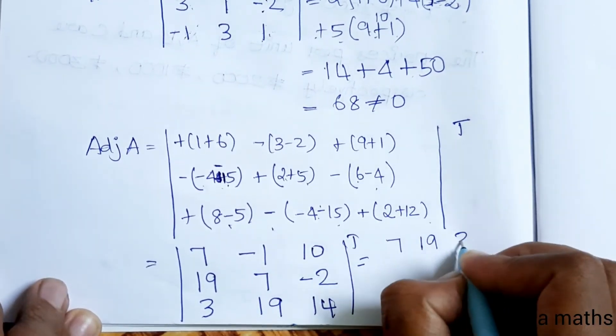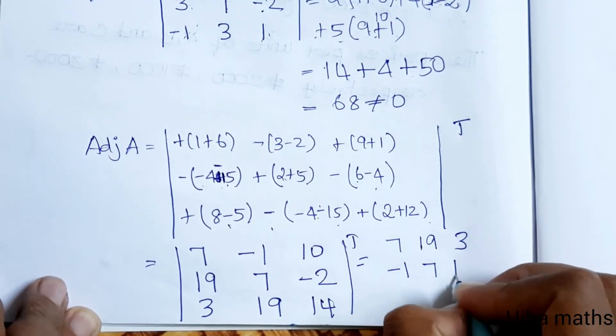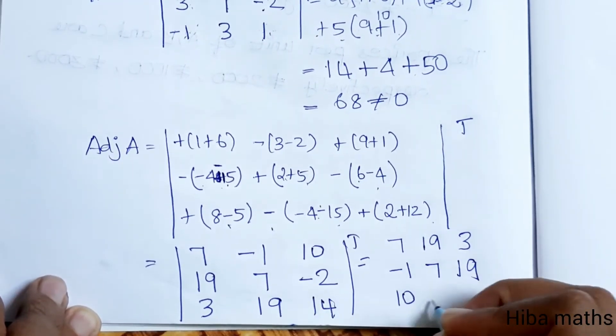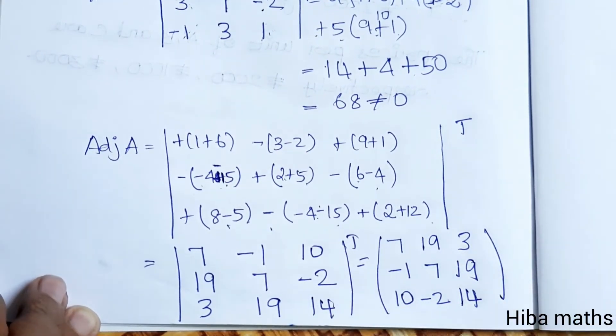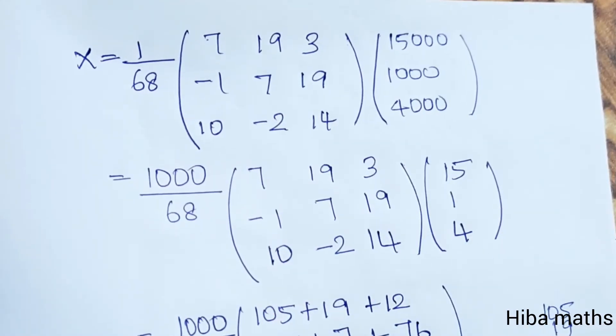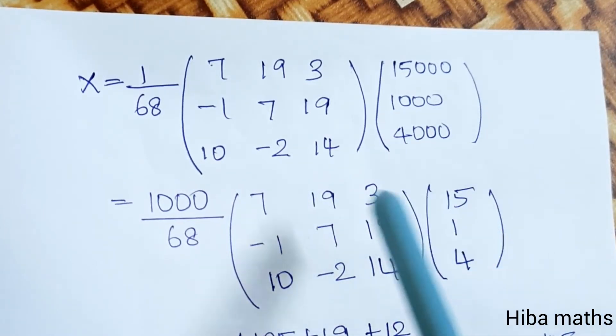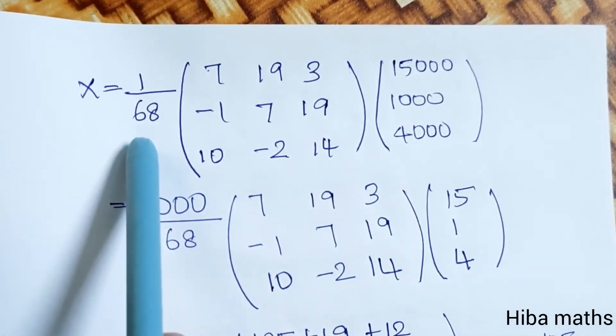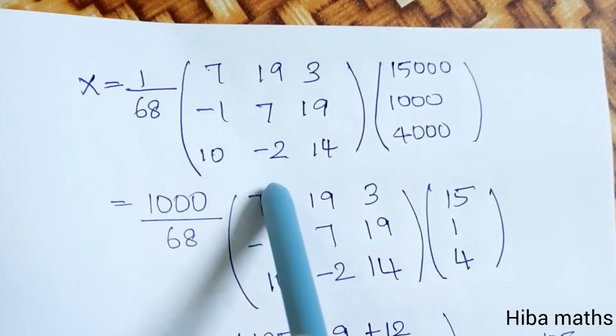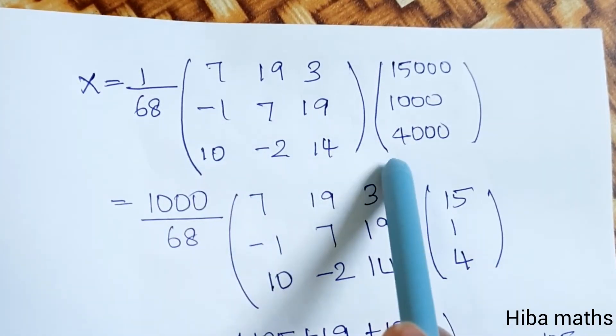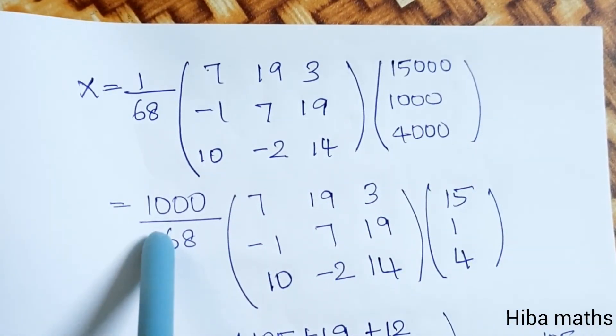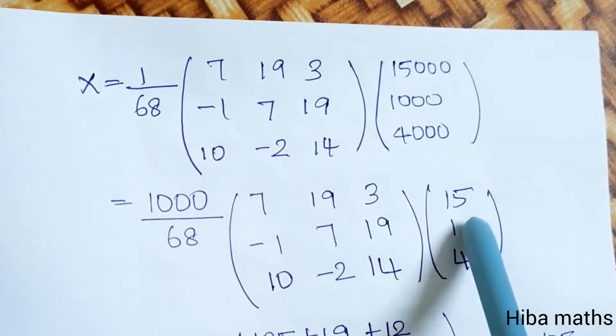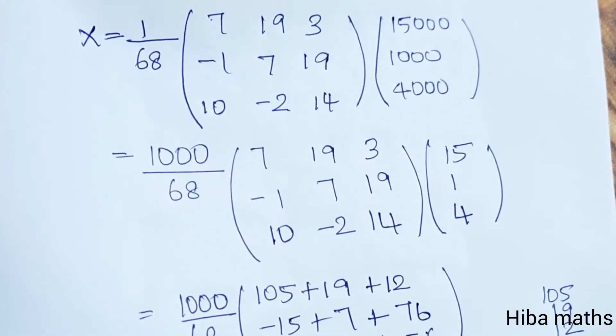A inverse formula: X equals A inverse into B. X equals 1 by 68 times adjoint of A times B matrix. In B matrix, we can take 1000 common, so we have 1 by 68 times 1000 times the adjoint matrix multiplied by 15, 1, 4.